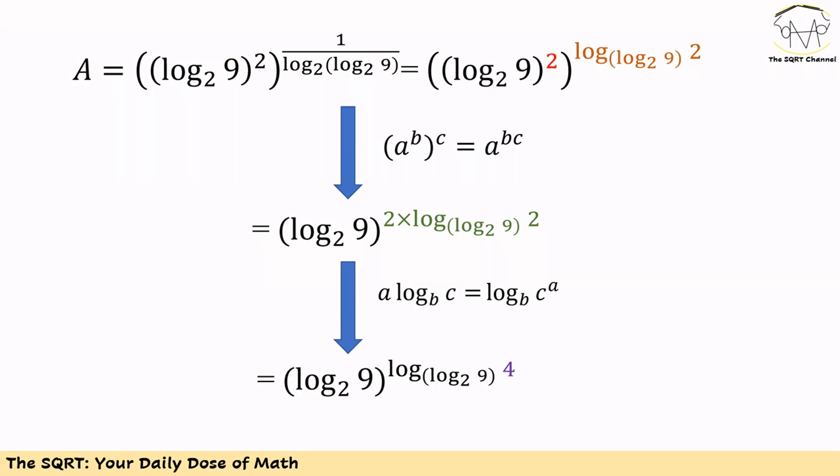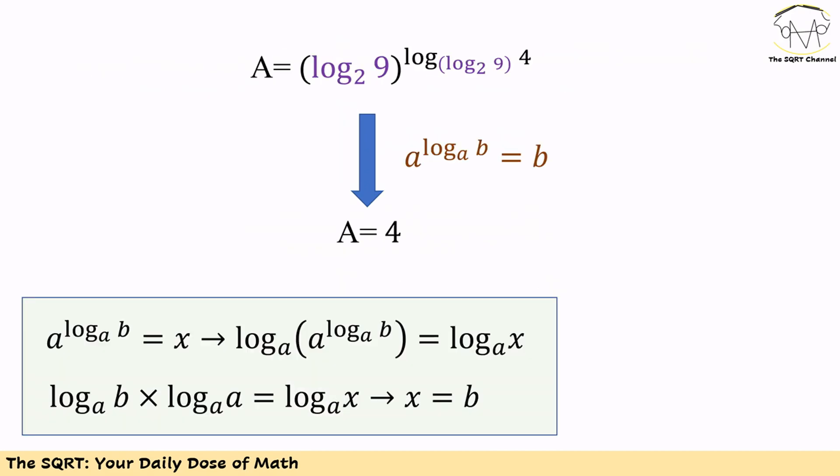We have A times log of C in base B, which can be written as log of C to the power of A in base B. Using this to simplify the green part, we get log of 4 in base log 9 in base 2 for the exponent. Now note that log of 9 in base 2 appears in two places. We use the trick: A to the power of log B in base A equals B. Applying this, the whole expression for the first term evaluates to 4.